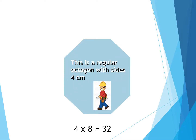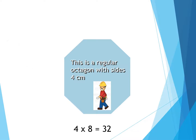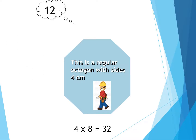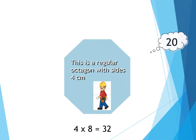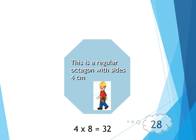The next thing is an octagon. We're going to determine the perimeter of this octagon — each side is four centimeters. So we're going to count by fours: four, eight, 12, 16, 20, 24, 28, 32.